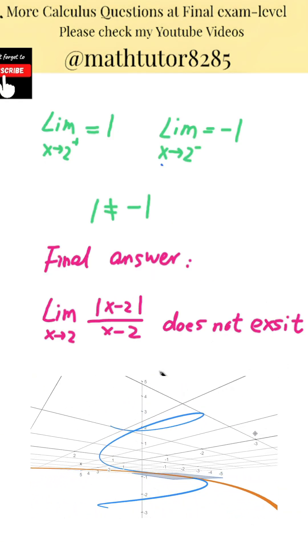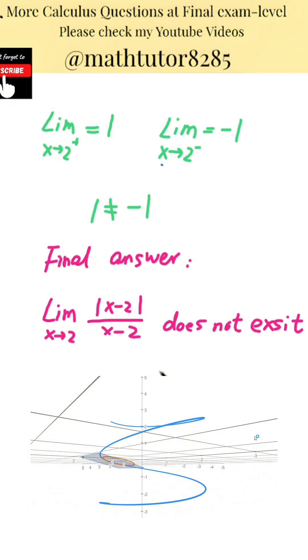Always analyze the left-hand limit and the right-hand limit separately. That's the only way to know whether the full two-sided limit exists. If the two one-sided limits are not the same, then the limit simply does not exist.